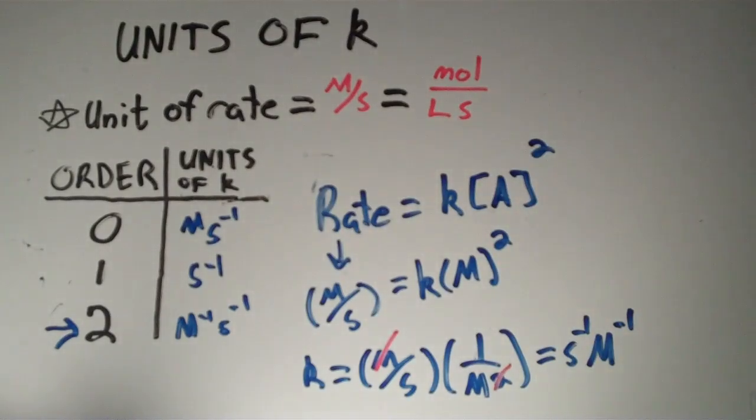Molar is moles per liter. That's a quick and straightforward way to derive the units for the rate constant of a zero-order, first-order, second-order, or indeed any order of reaction.